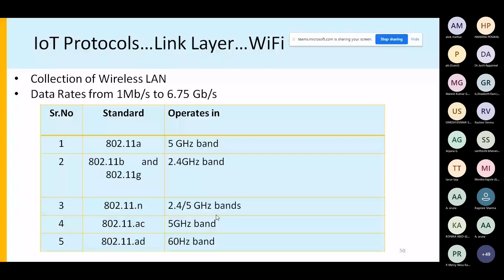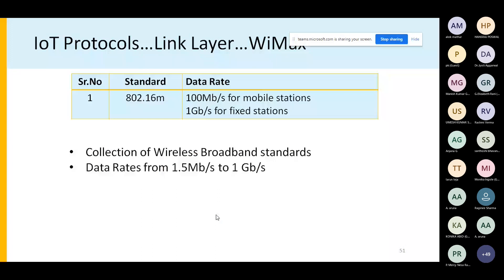WiMAX, or 802.16m, is generally used for base-station-to-base-station communication. Wi-Fi is used for last-mile connectivity, whereas 802.16 is for wide area networks. Data rates vary: 100 Mbps is achieved for mobile stations, while up to 1 Gbps is available for fixed stations.